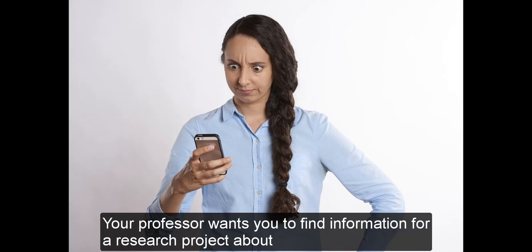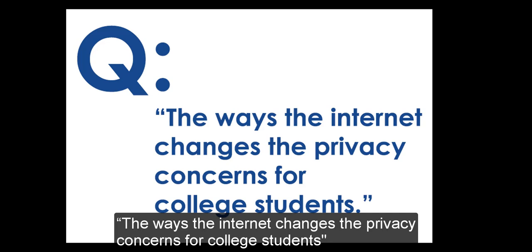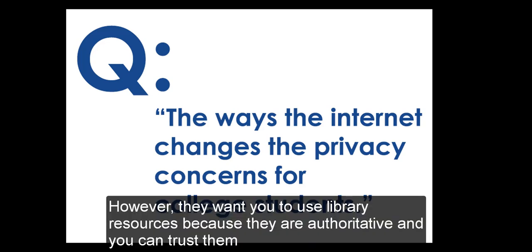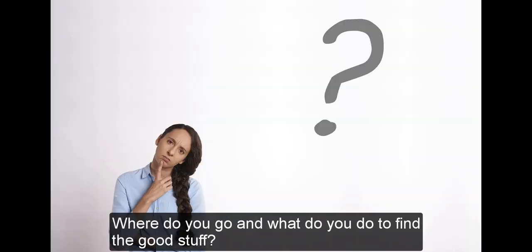Your professor wants you to find information for a research project about the ways the internet changes the privacy concerns for college students. However, they want you to use library resources because they are authoritative and you can trust them. Where do you go and what do you do to find the good stuff?